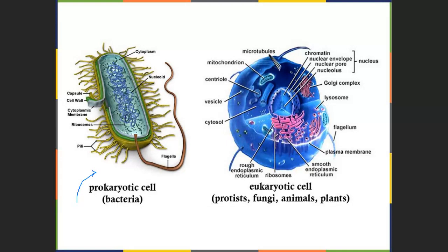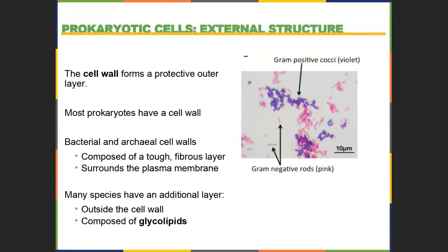Because bacteria are simpler, a lot of their structures have to do multiple roles for the cell, where eukaryotic cells are much more complex. If we look at prokaryotic cells, we recall that last time we talked about the cell walls. For most bacteria, the cell wall is their protective outer layer. Almost all prokaryotes have a cell wall. Both bacterial and archaeal cell walls are composed of really tough, fibrous material that surrounds the plasma membrane.